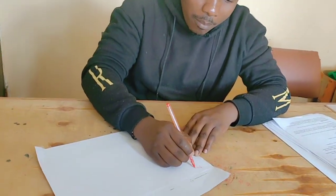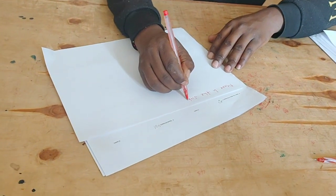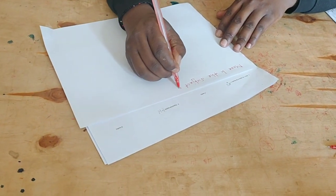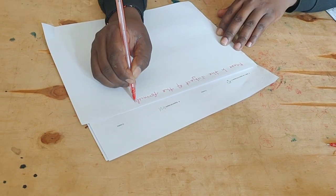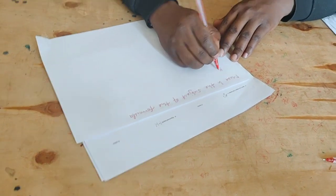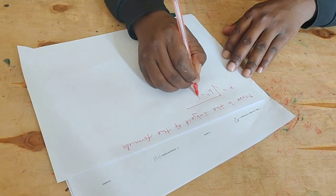The question is: make h the subject of the formula, where k equals the square root of h squared minus p, all over hp.